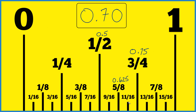Let's divide 11 by 16. We get 0.6875, so that's 11 sixteenths of an inch. So I'm guessing our 0.7 inch here is going to be right about here.